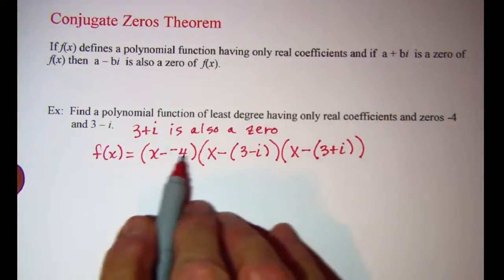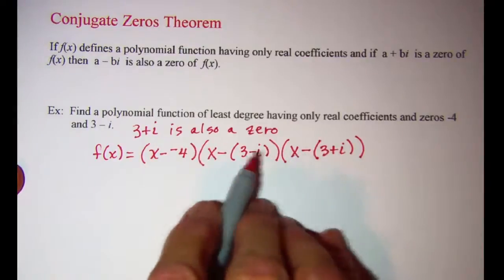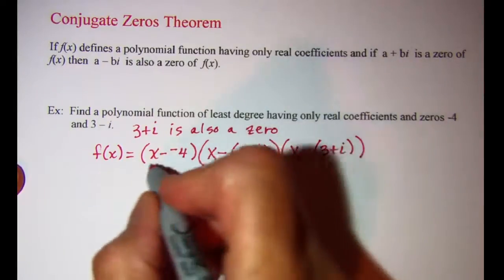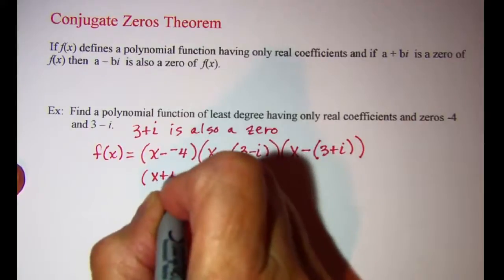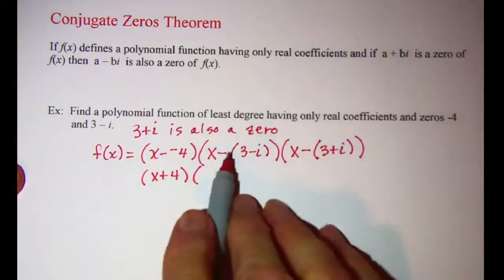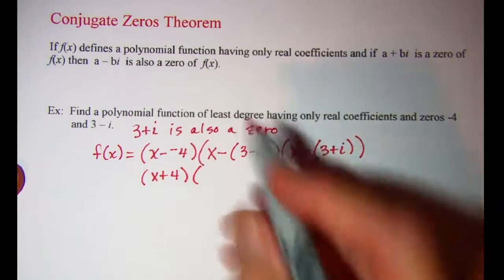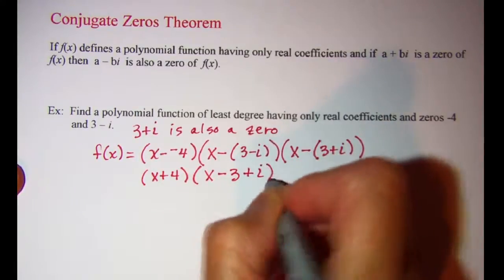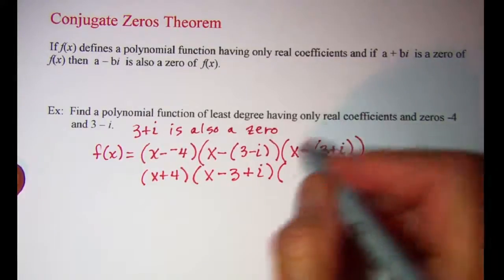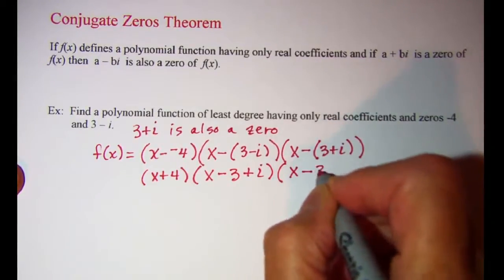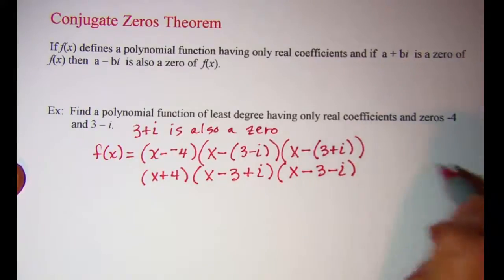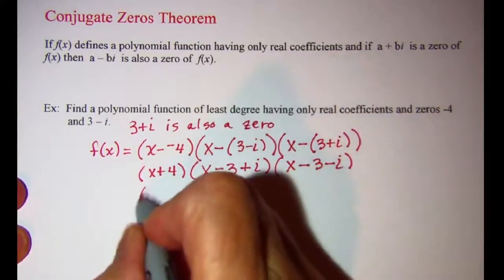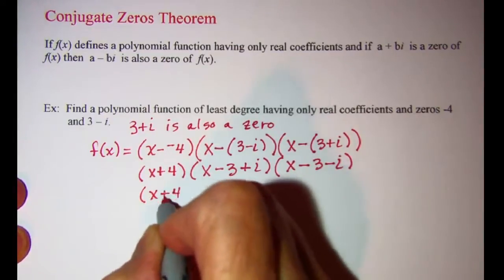So basically I just need to simplify this a little bit to get my function. I'm going to change x minus negative 4 to x plus 4, and then I'm going to distribute this negative through this binomial right here. So I have x subtract 3 plus i, and then the same thing here. I'm going to multiply these two trinomials — things will cancel off.